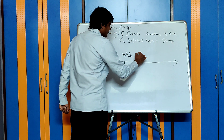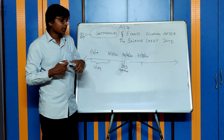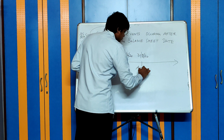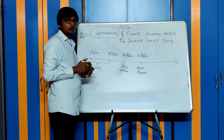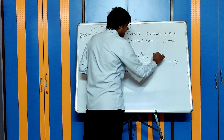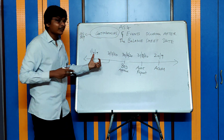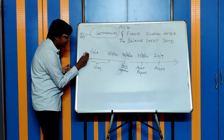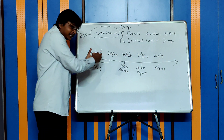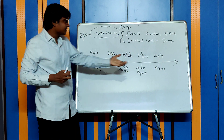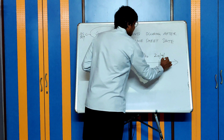The auditors take two months' time, and on 31st August, the auditors give the audit report to the company. Then the AGM is held. When the AGM is held, let us say on 20th September, the financial statements pertaining to the period 1st April 2019 to 31st March 2020 are given to the shareholders of the company in the AGM on 20th September 2020.